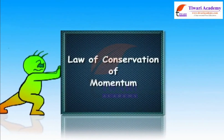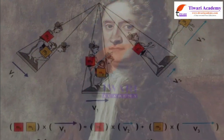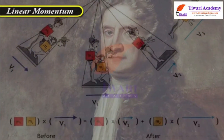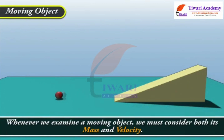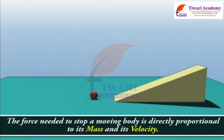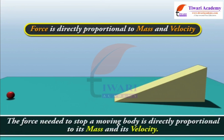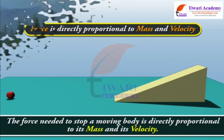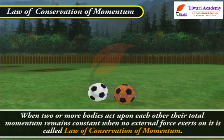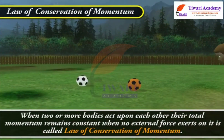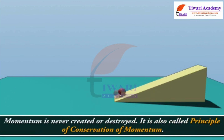Law of Conservation of Momentum. When two or more bodies act upon each other, their total momentum remains constant when no external force acts on them. This is called the law of conservation of momentum. Momentum is never created or destroyed. It is also called the principle of conservation of momentum.